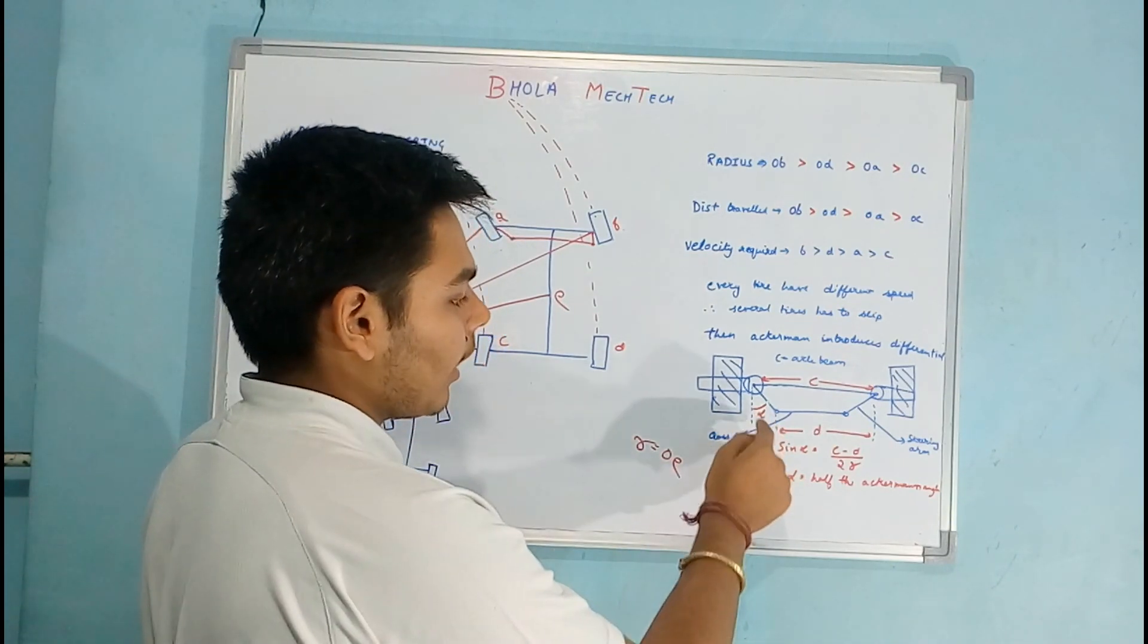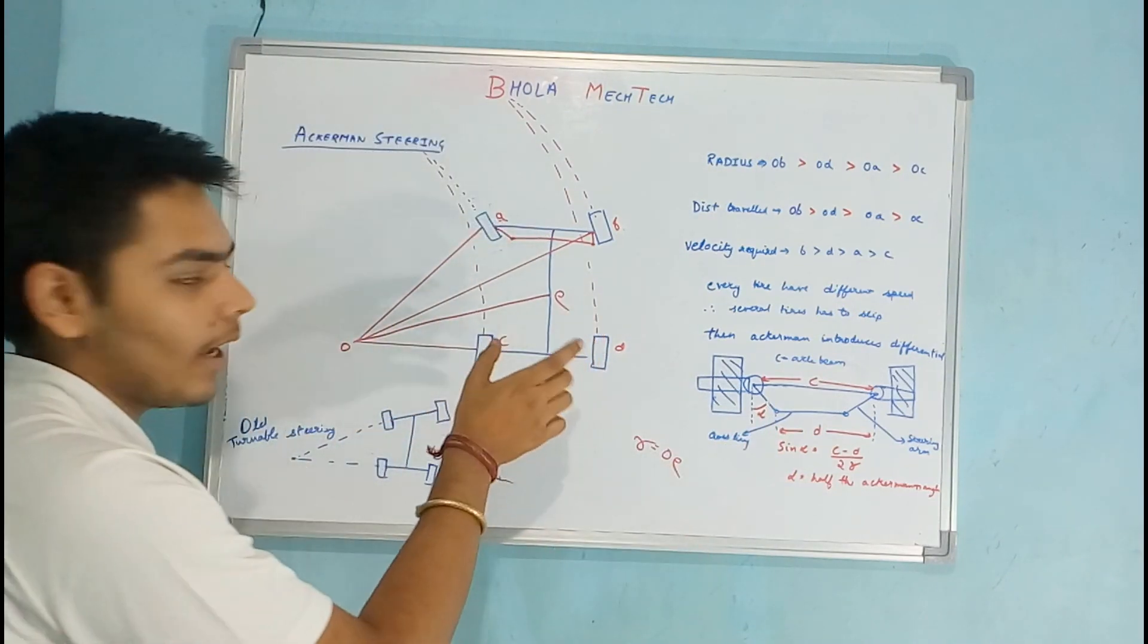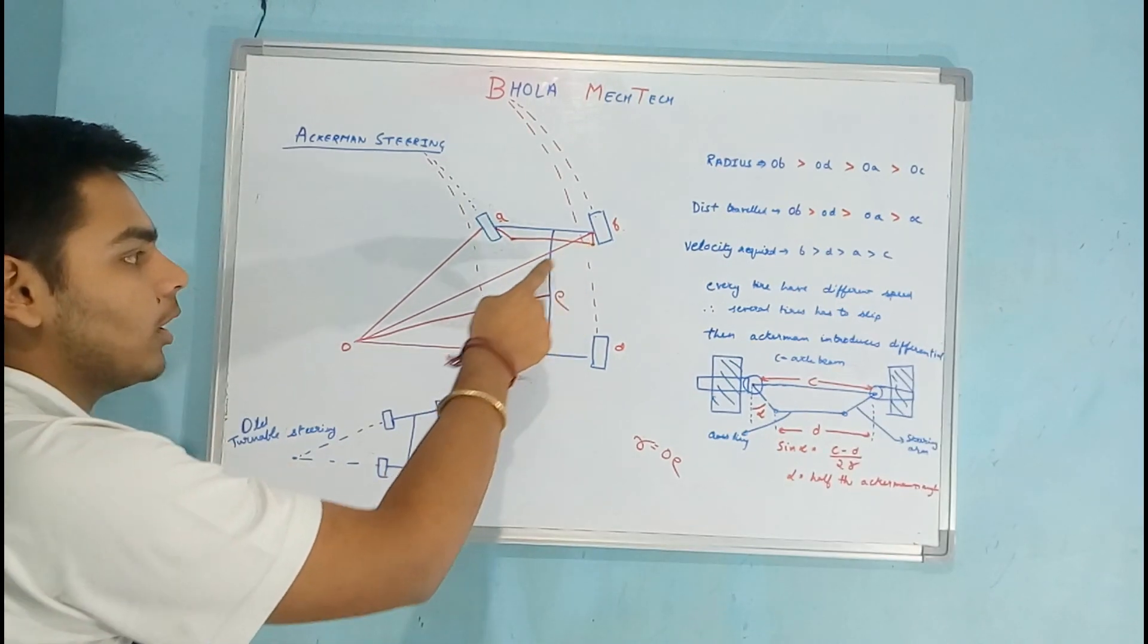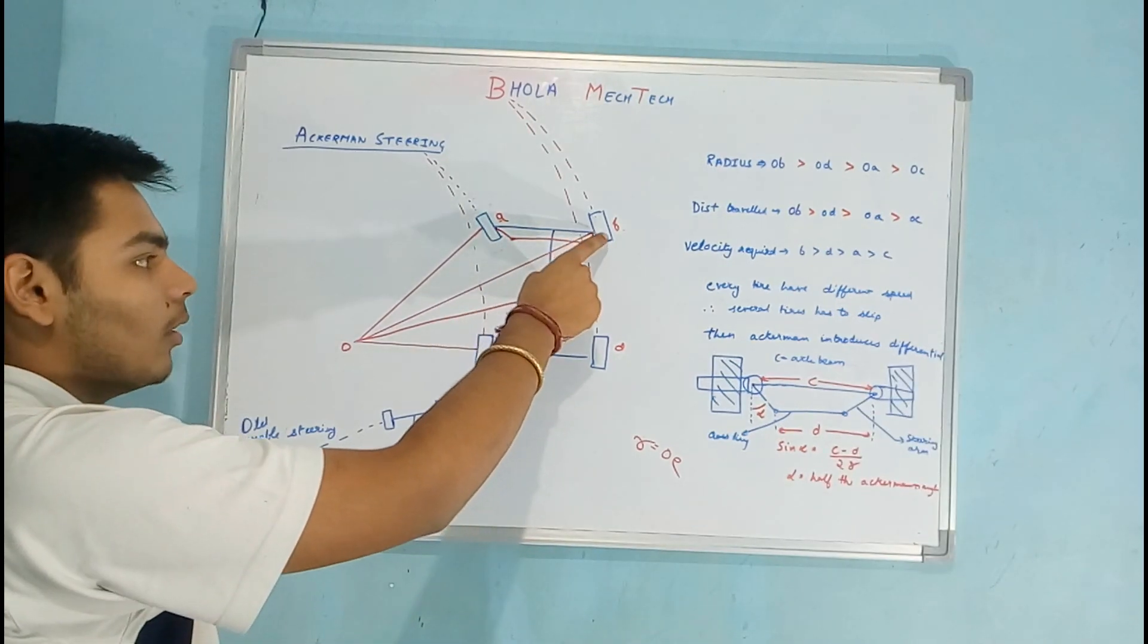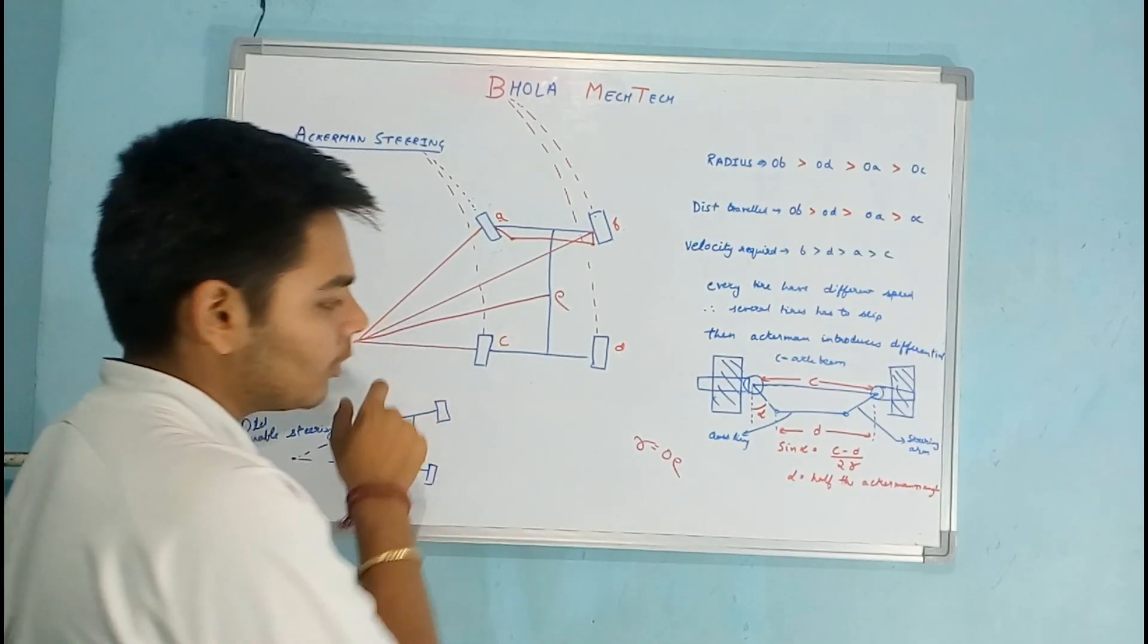Now if the angle alpha is achieved by the steering arm, then this will have a geometry such that the perpendicular geometrical lines drawn from the wheels will intersect at a single point.